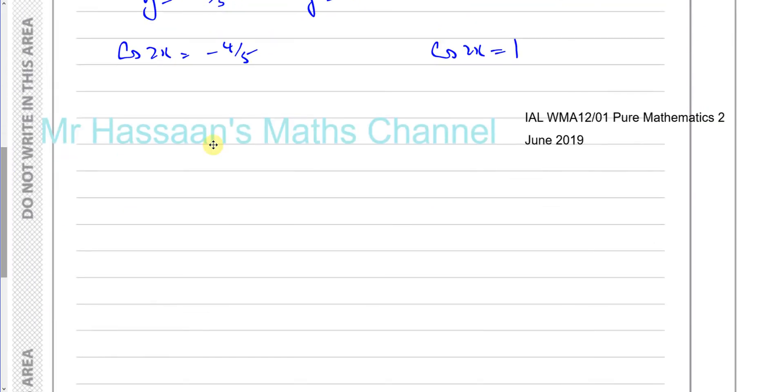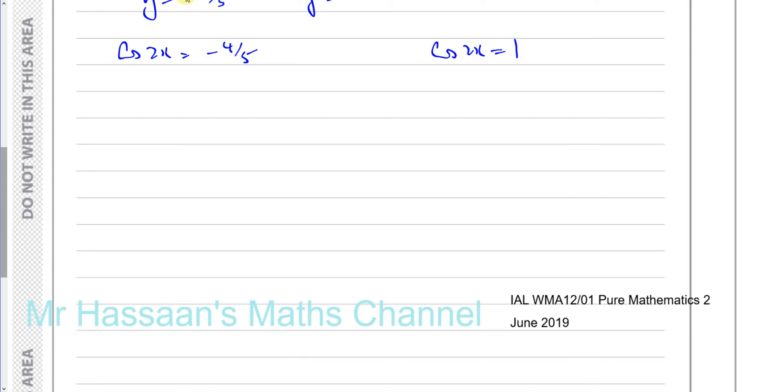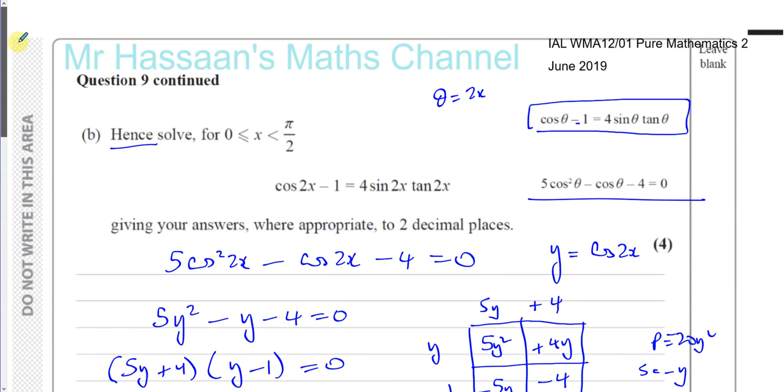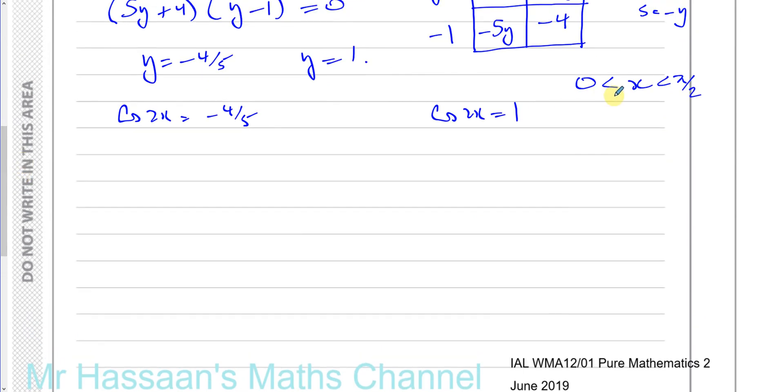Now, we were told to solve this for these limits. Now, we're going to deal with 2x here. So what I'm going to do is multiply every part of this inequality by 2, and I'm left with 0 to pi. I need to catch all the angles from 0 to pi and then adjust my answer. So now let's solve the first one. Now, because it's mentioning pi here, our answer should be in radians. So let's find the first angle using our calculator.